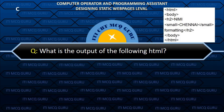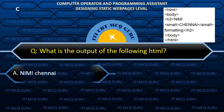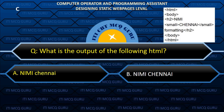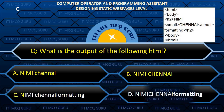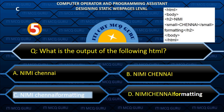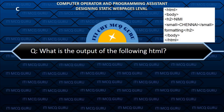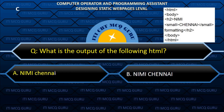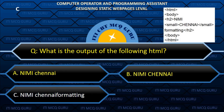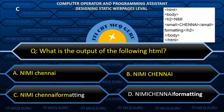What is the output of the following HTML? C. Nimi Chennai Formatting. What is the output of the following HTML? D. Nimi Chennai Formatting.